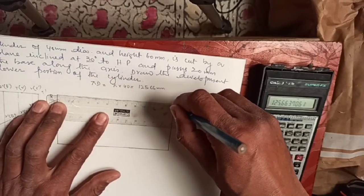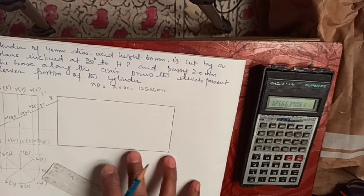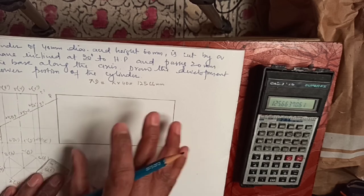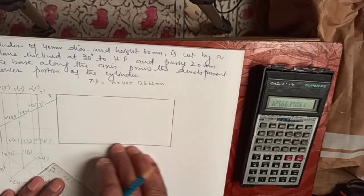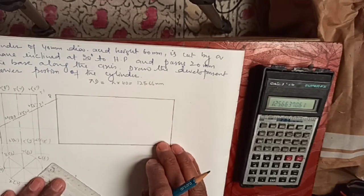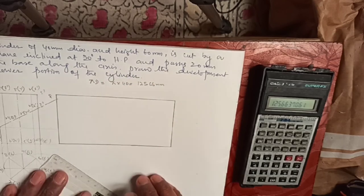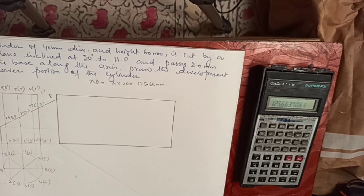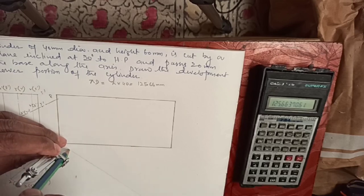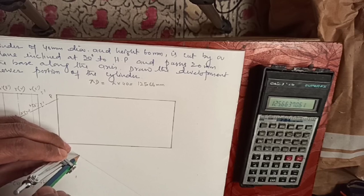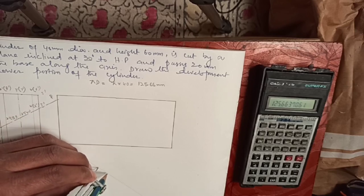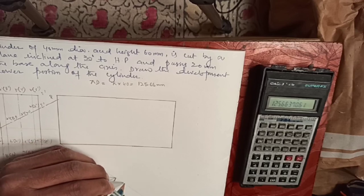Now, as we did in the previous class, we have to unwrap the cylinder. The circumference of the unwrapped cylinder is pi × d, and here d = 40 mm, so pi × 40 = 125.66 mm. We draw a line equal to 125.66 mm.